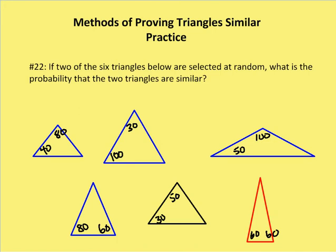Problem number 22 asks if we have two of six triangles below that are selected at random, what is the probability that the two triangles are similar? So let's recall again, if we have two similar triangles, we know that the angle measures are going to be congruent and the side lengths are going to be proportional.